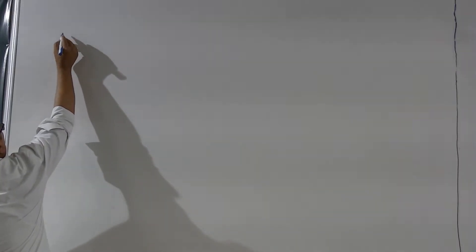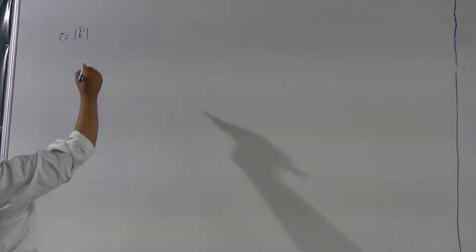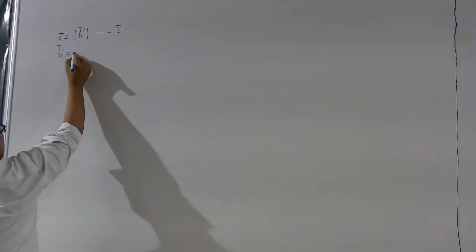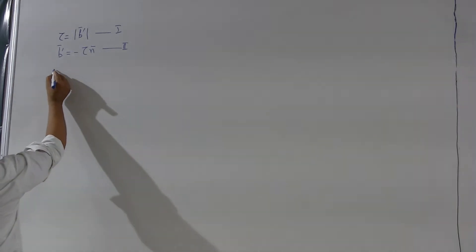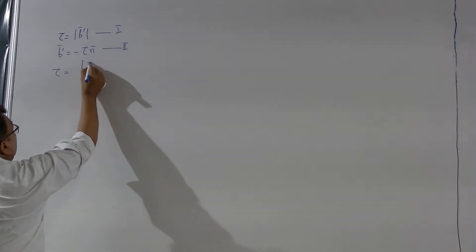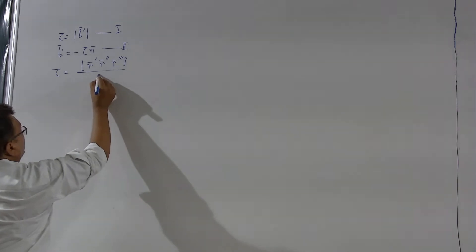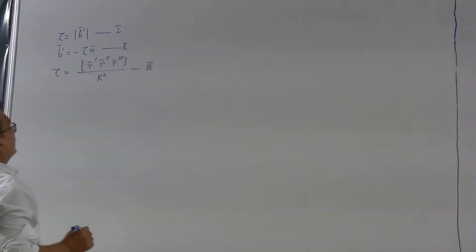We discussed formulas for torsion. Now we have got 3 expressions for tau. The first one was tau given as the absolute value of the derivative of the binormal — this was the defining property, let us call it number 1. Number 2, we computed B-dash and this B-dash has a direction along the principal normal. And in terms of the derivative of R, we found that tau is given by the scalar triple product of the 3 vectors R-dash, R-double-dash, R-triple-dash upon k-squared. These are the 3 formulas derived so far for the torsion.